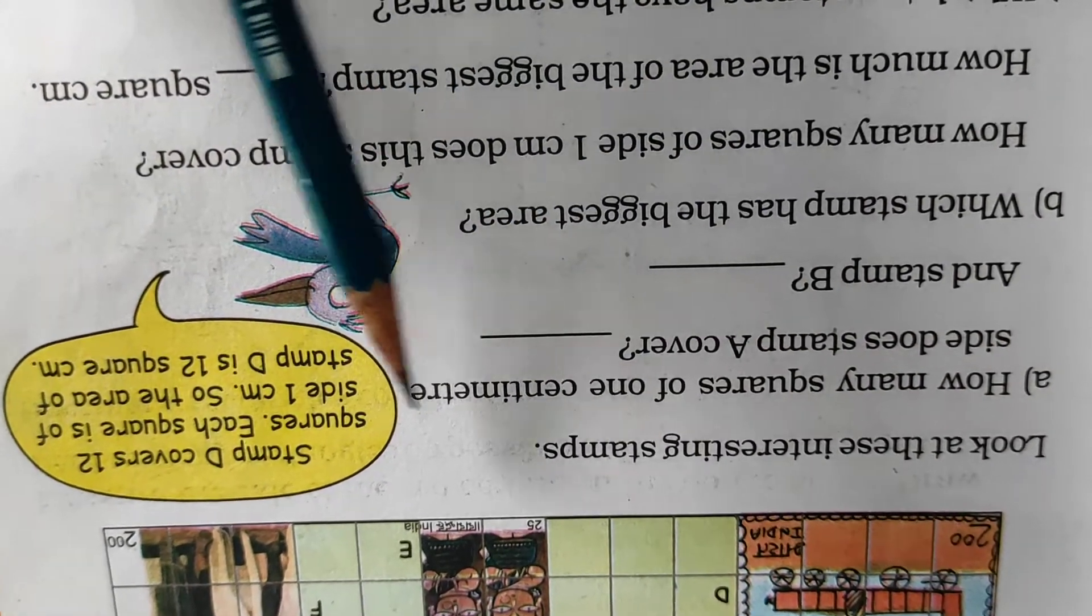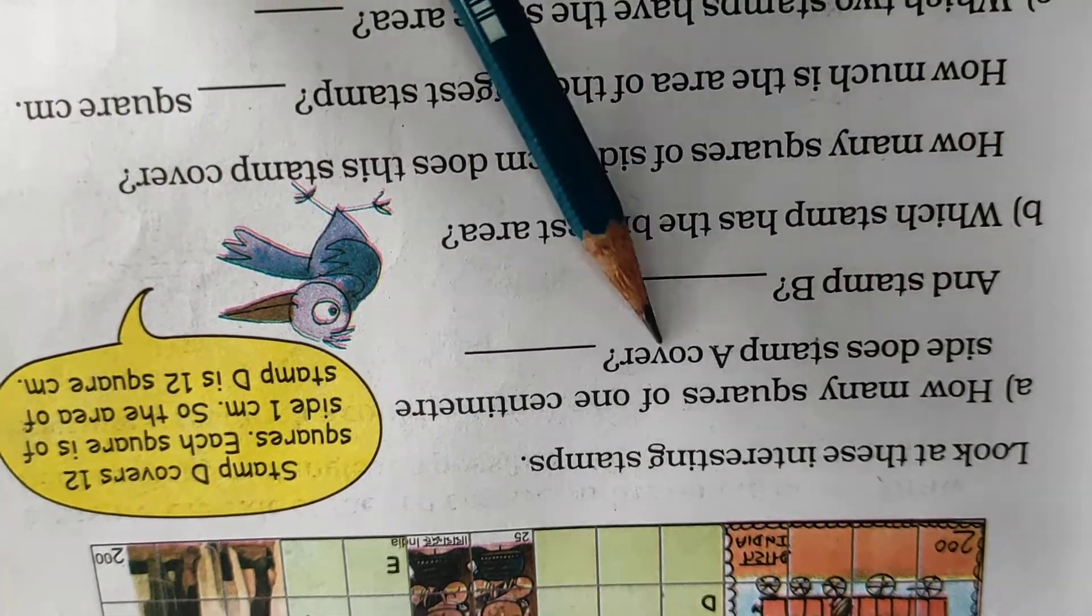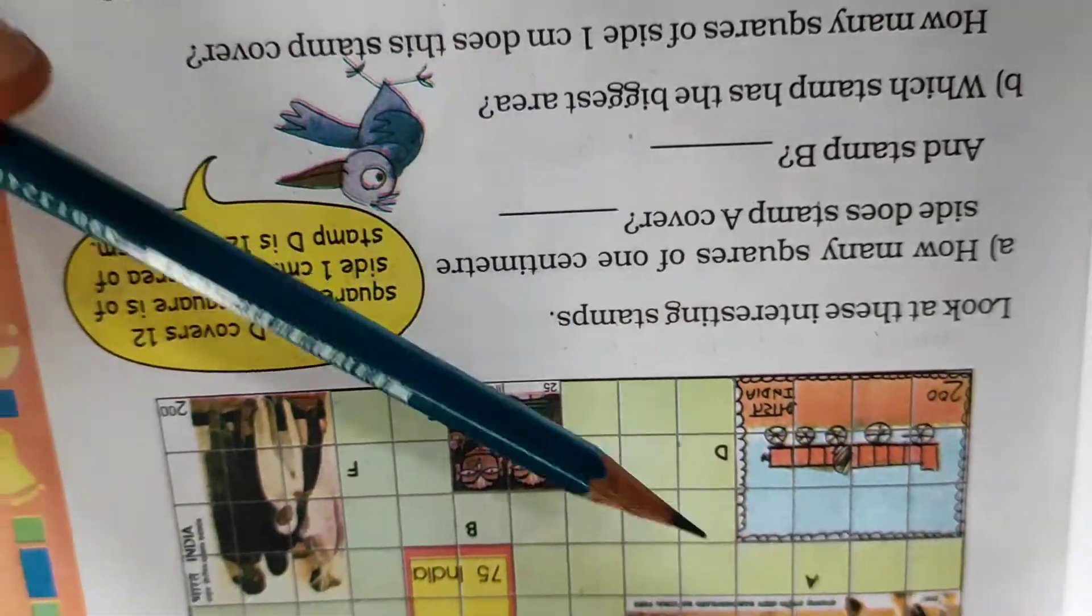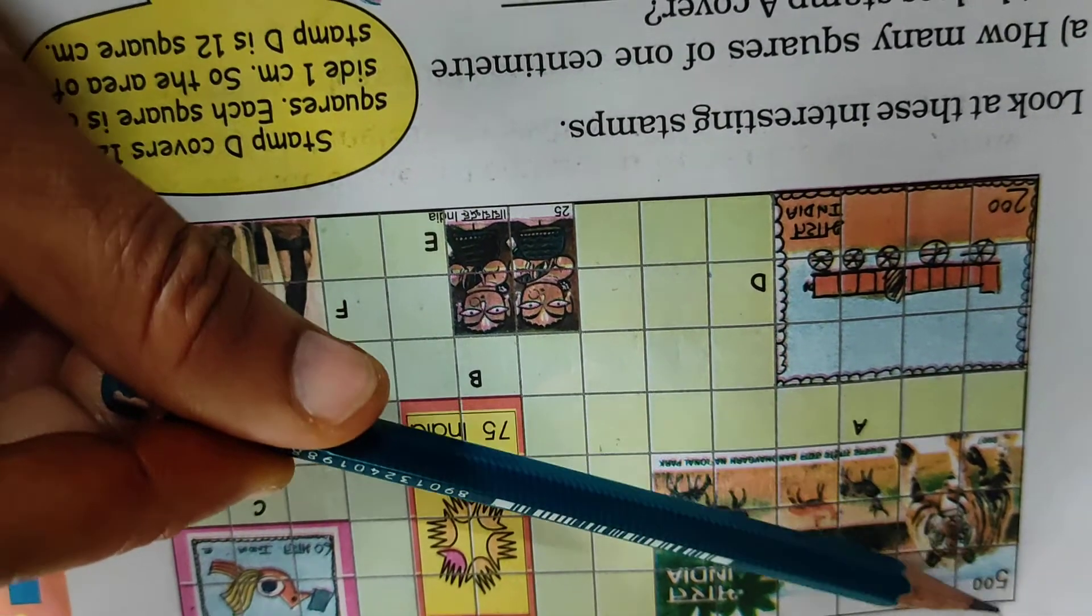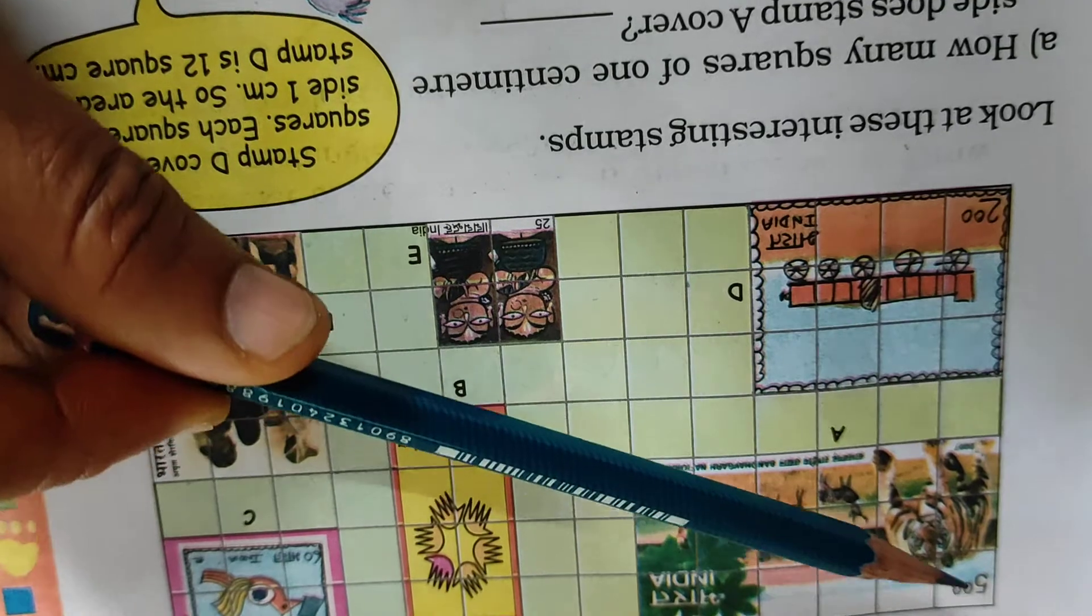Look at these interesting stamps. How many squares of 1 cm side does stamp A cover? So the side of square is 1 cm. How many squares covered?